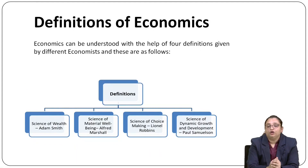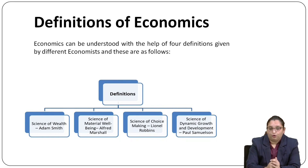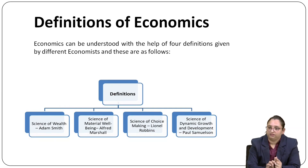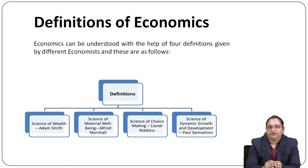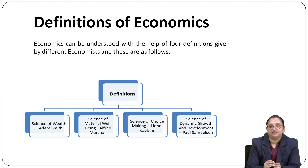We are going to discuss the various definitions of economics. There are broadly four definitions: first, science of wealth, given by Adam Smith, who is also called the father of economics; second, science of material well-being, given by Alfred Marshall; third, science of choice making, given by Lionel Robbins; and fourth, science of dynamic growth and development, given by Paul A. Samuelson.